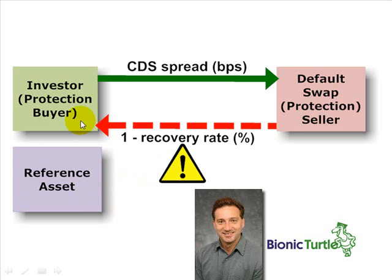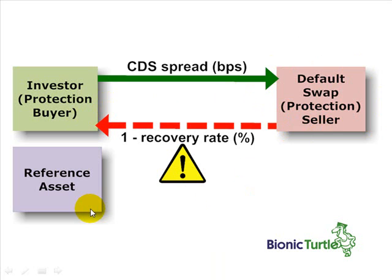A reference asset, the investor who buys protection, and the default swap seller who sells protection. Start with the reference asset in purple. This could be either an entity — by which I mean an entire corporation or even a sovereign — or it could just be a specific obligation, a loan or a debt instrument; think of this as a bond.